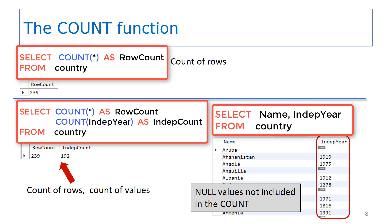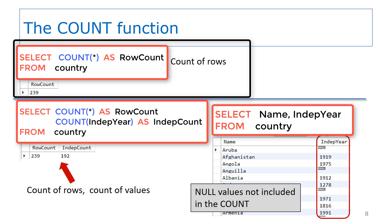To finish up with aggregate functions, we will look at the COUNT function. This function has two uses: to get the number of rows that are in the table or the result set, and to get the count of the number of values. In the top part of the slide, you see the COUNT function used to get the number of rows. In this case, the COUNT is the number of rows in the country table since there is no WHERE clause to limit the rows. There are 239 rows in the country table. The syntax for the COUNT function is: COUNT, open parenthesis, asterisk character, closing parenthesis. It is very important that you use the asterisk character if your intention is to get the number of rows in the table or the result set.